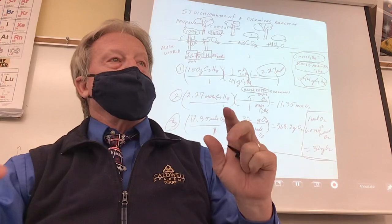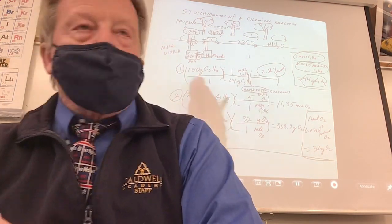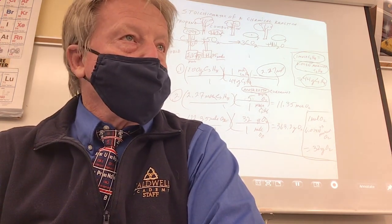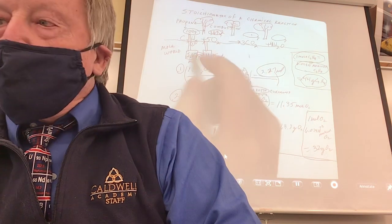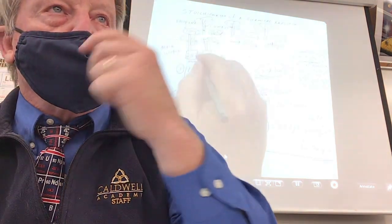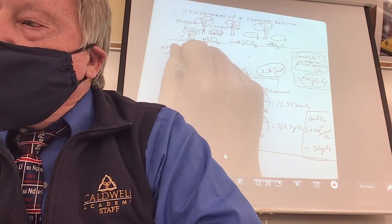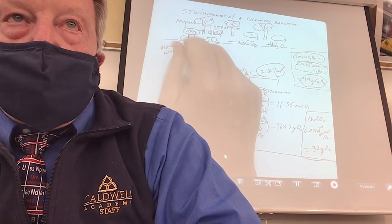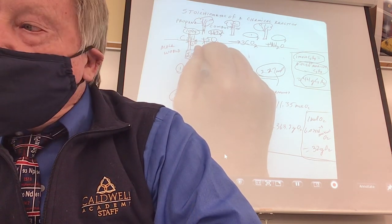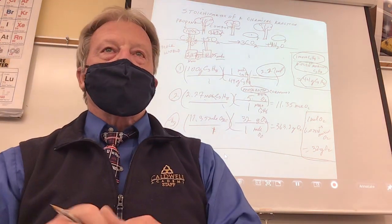Try not to ever go below 3 significant figures. Don't round that to 0.2 or 2. Keep it at 2.27. Now what I want to do is go from here to here. If you can say it in words, you'll know how to do factor label. Change moles of propane into moles of oxygen — I'm still in the mole world.